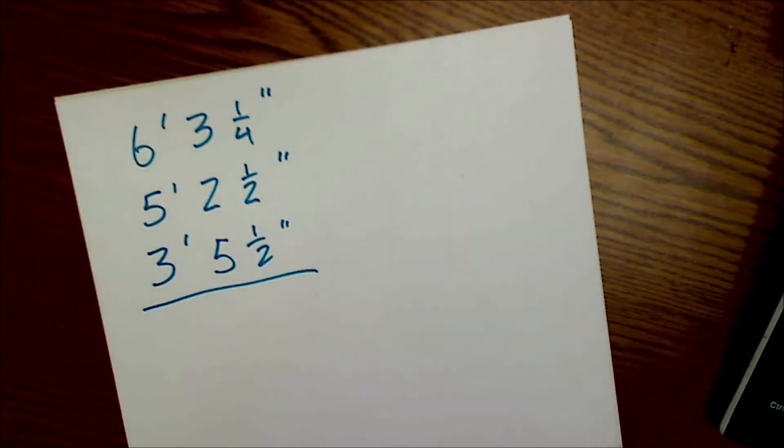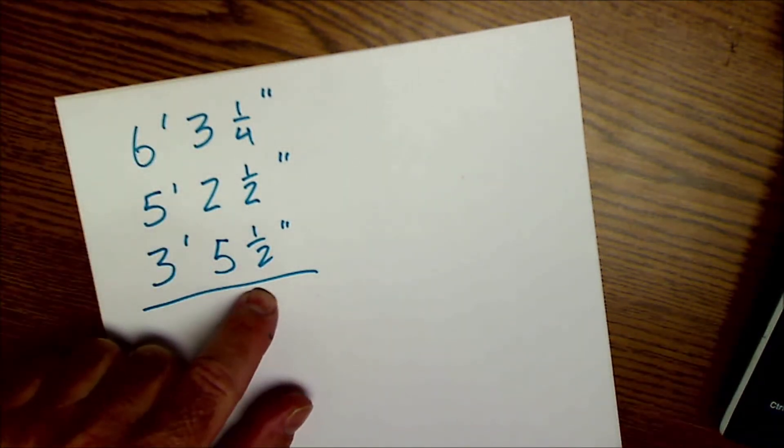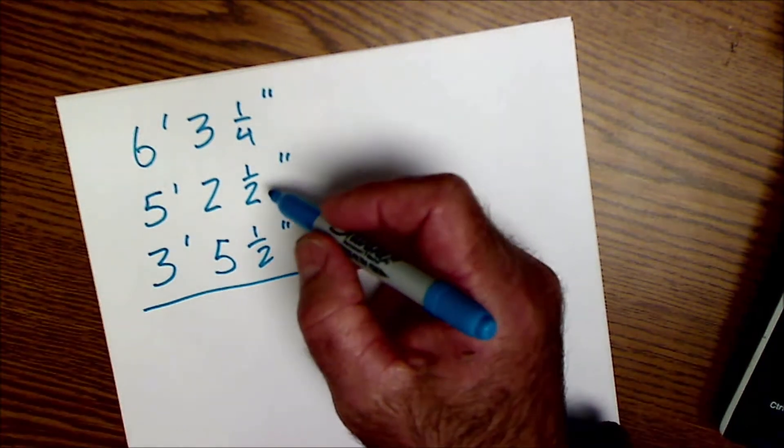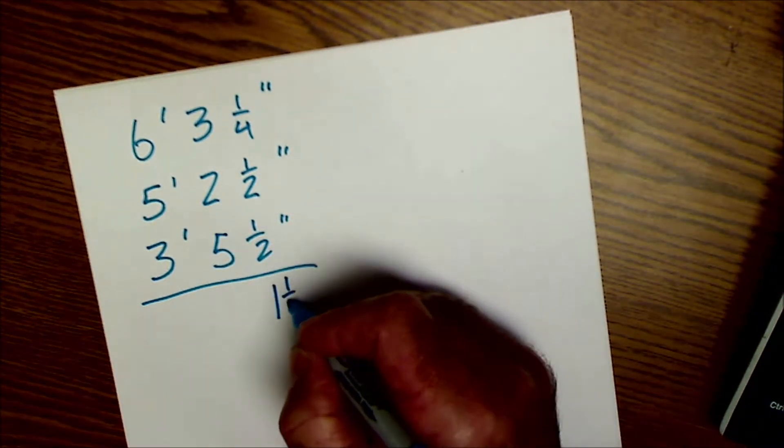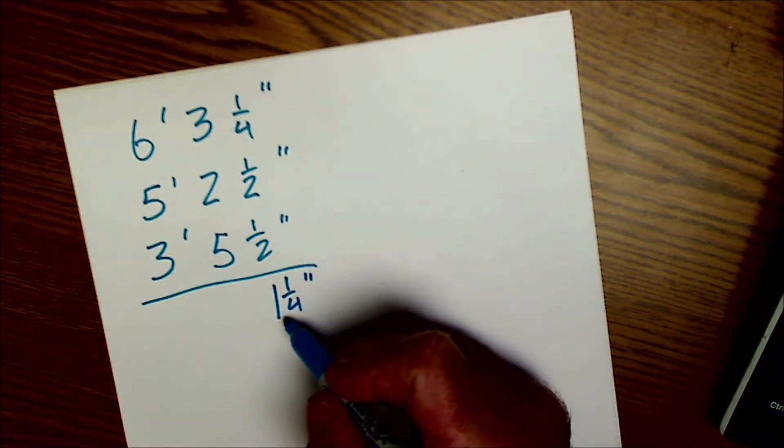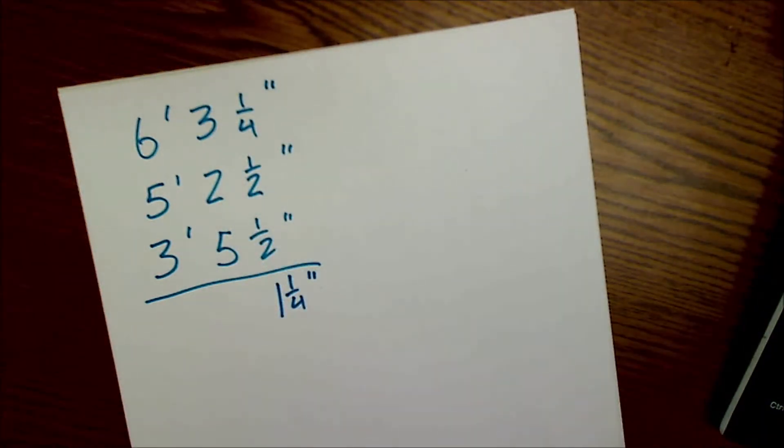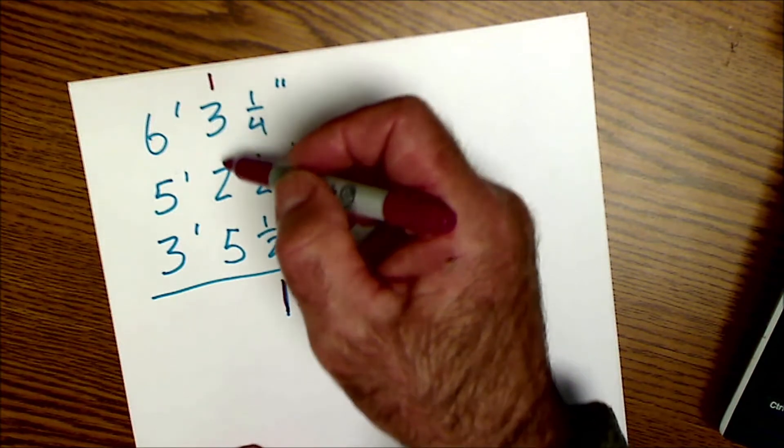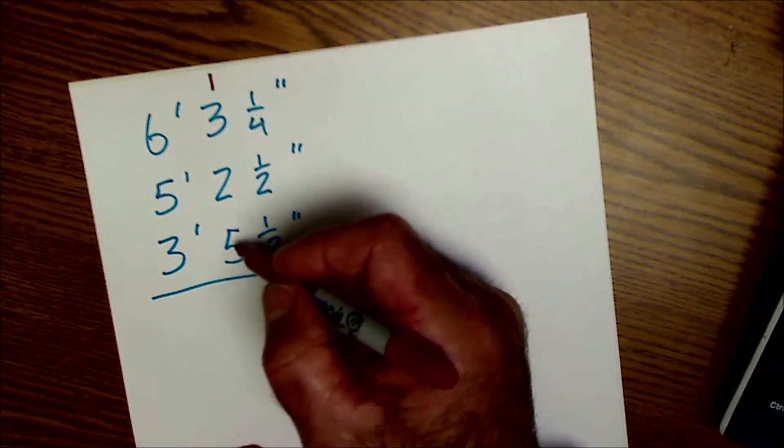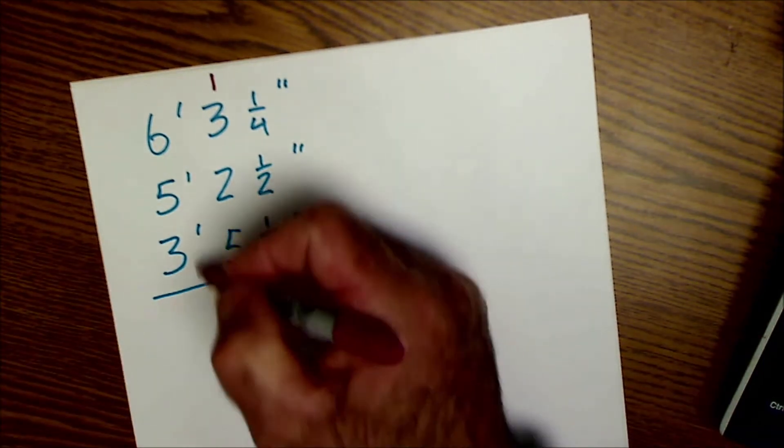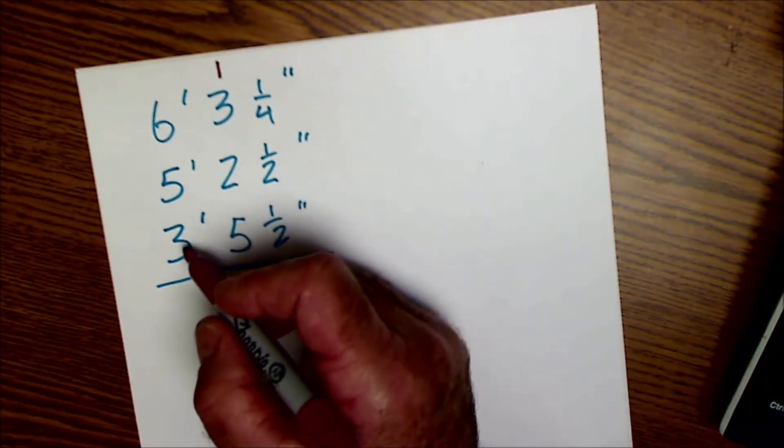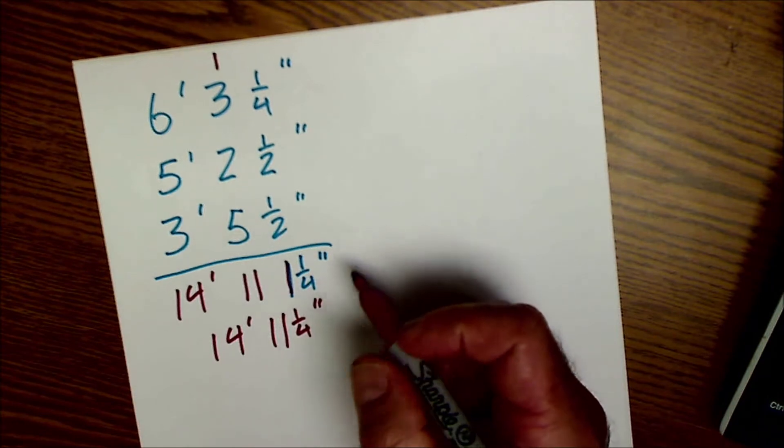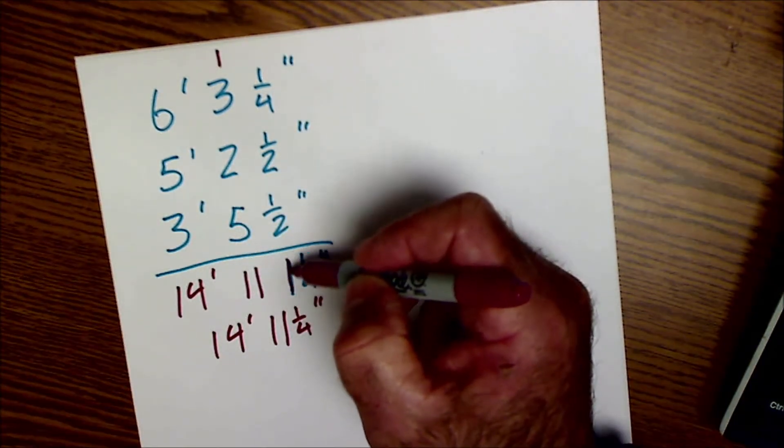So now I'm adding 6 foot 3 and a quarter inches, 5 foot 2 and a half inches, and 3 feet and 5 and a half inches. I'm going to do my fractional pieces first and then if there's any excess I'm going to carry it over. So one quarter plus one half plus one half is one and one quarter inches. I'm going to take that one and carry it up here, leaving me with a quarter inch. And then one and three is four plus two is six, six plus five is eleven. So I'm left with fourteen feet eleven and one quarter of an inch.